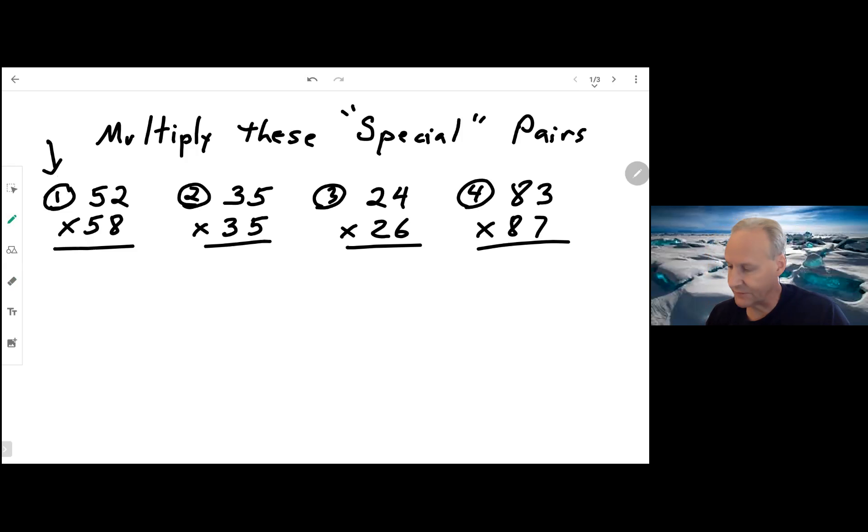For this first problem, I've got 52 times 58 and I'm going to multiply the 8 times the 2 which is 16, carrying the 1. 8 times 5 is 40 and the 1 makes 41. I put a 0 to hold the place. Then the 5 times 2 is 10. Again, I'm carrying a 1. 5 times 5 is 25 plus 1 is 26. And then I add all my digits together to get 3,016.